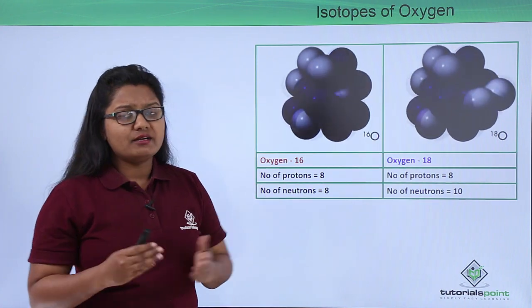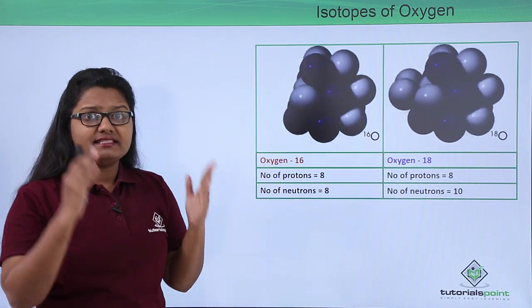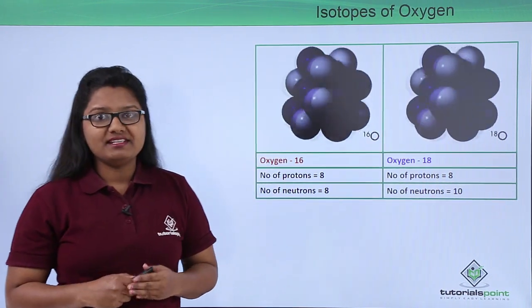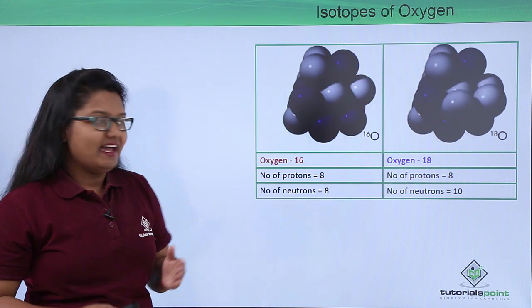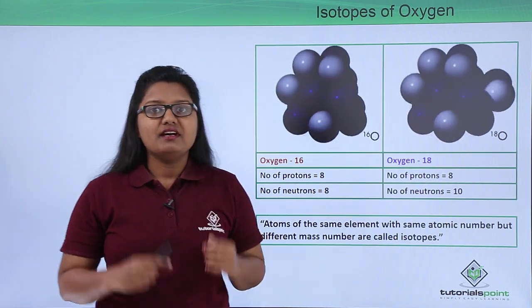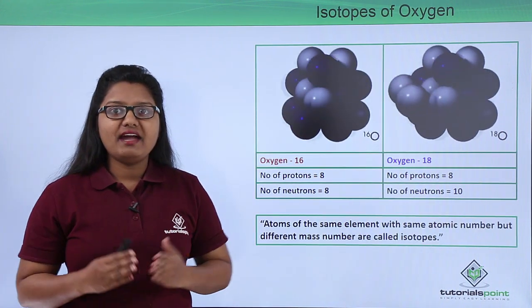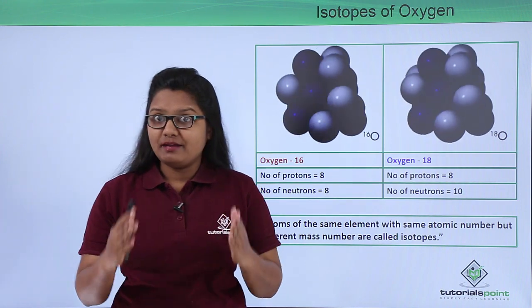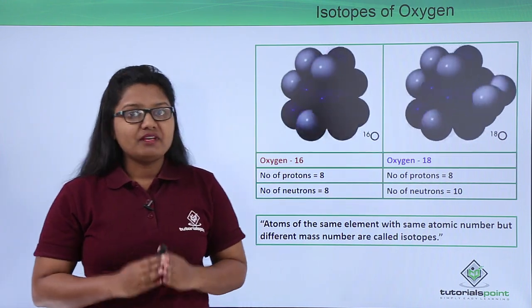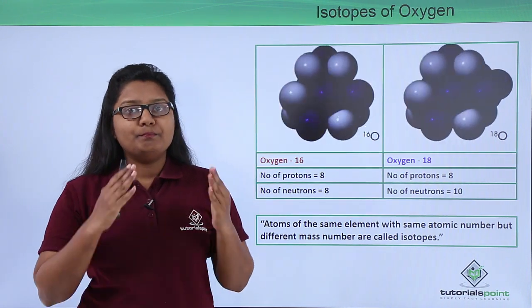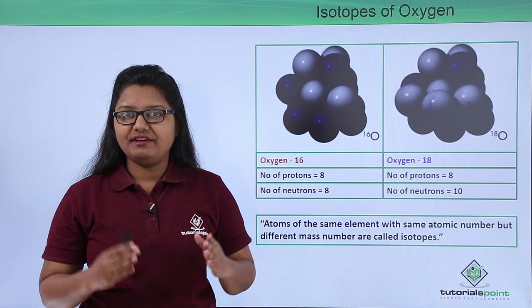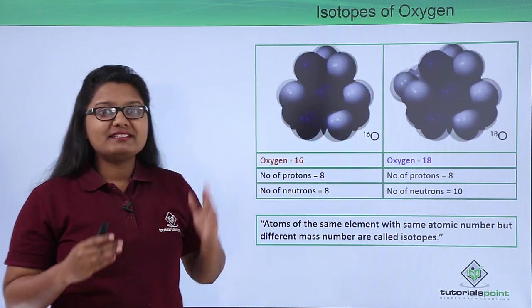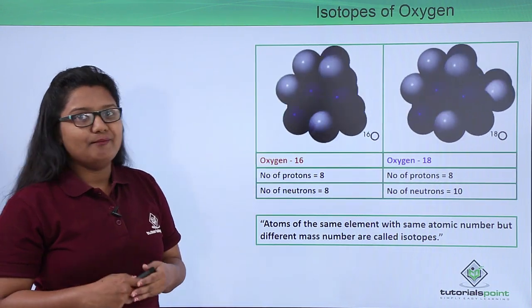Such atoms of the same element with different mass numbers are termed isotopes. We define isotopes as atoms of the same element with the same atomic number but different mass number. Now let us look at some examples.